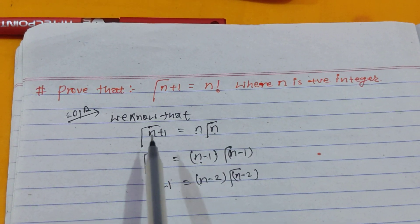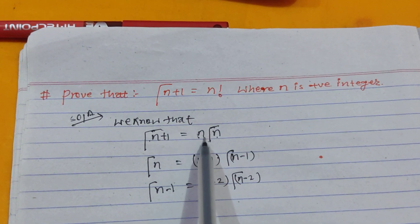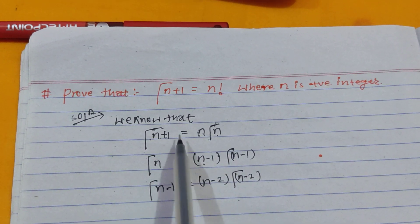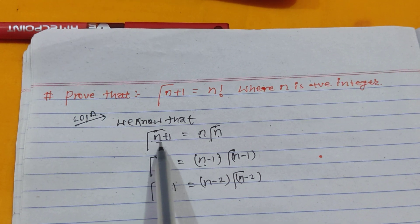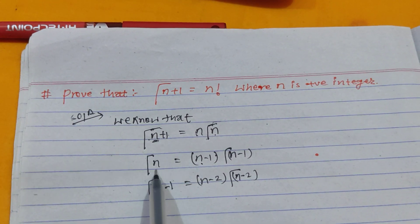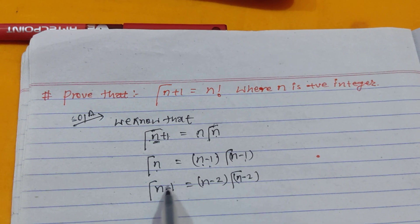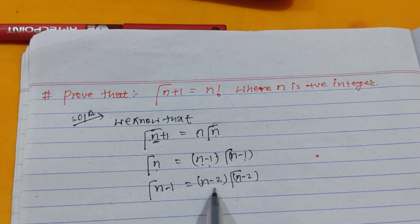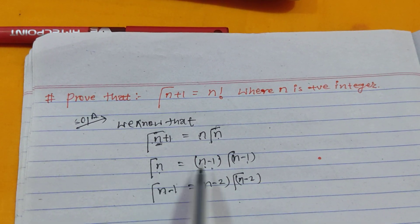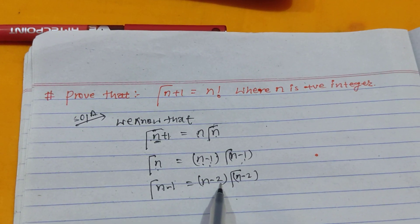Similarly, Gamma(n+1) equals n into Gamma(n). Replacing Gamma(n) using the recursive property, it becomes n·(n-1)·Gamma(n-1), and similarly we can write Gamma(n) equals (n-1) factorial.